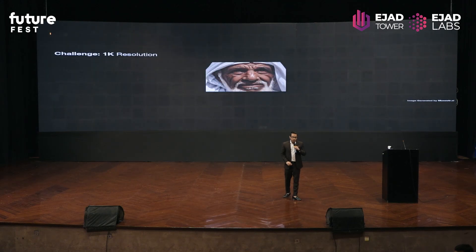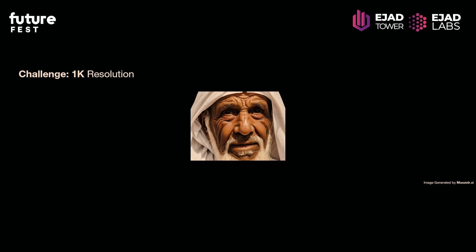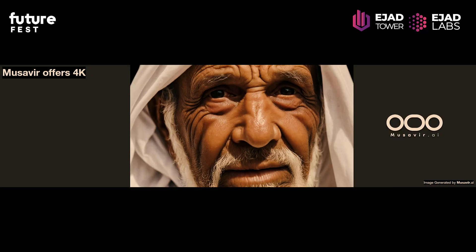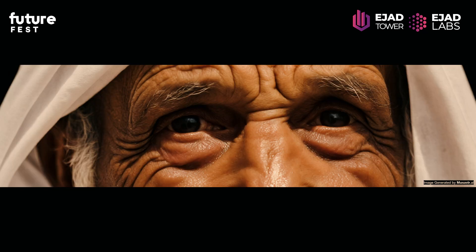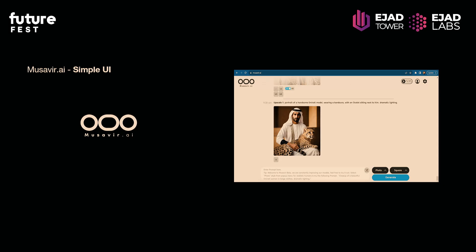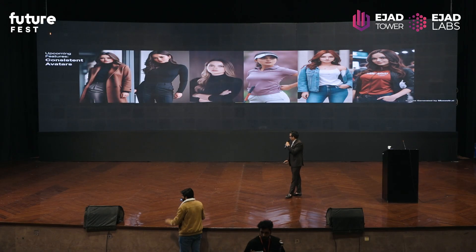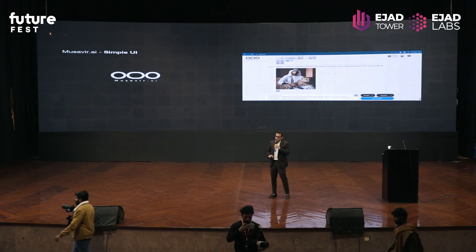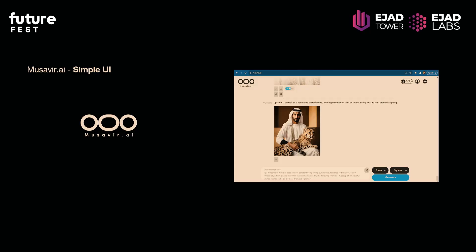The second differentiator is high-res imagery. Low-res images can't be used in marketing campaigns, on billboards, or on high-res displays. Musawir can generate 4K images — as you can see, there's no pixelation. The UI has been made very simple, just like ChatGPT. You can give it a prompt and get results within 30 seconds.